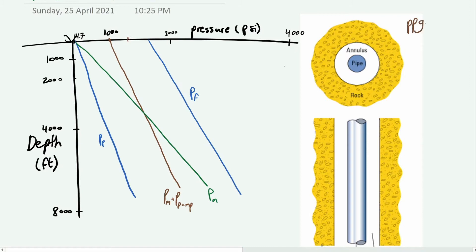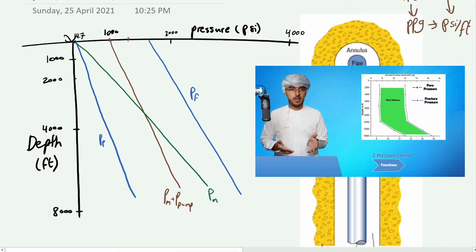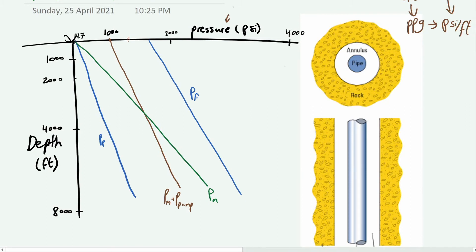We covered this graph briefly in the previous video. This is the pressure versus depth graph. This can also sometimes be the equivalent circulating density, so the dynamic density of the mud while it's moving, or it can be the pressure.